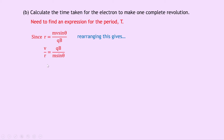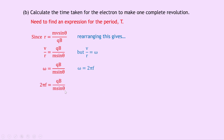We rearranged to V over R because we know V over R equals omega from rotational motion, and omega is related to period T. Replacing V over R with omega gives omega equals QB over M sine theta. Since omega equals 2 pi F, we substitute to get 2 pi F equals QB over M sine theta. Dividing both sides by 2 pi gives F equals QB over 2 pi M sine theta. Since T equals 1 over F, flipping numerator and denominator gives the period T equals 2 pi M sine theta divided by QB.